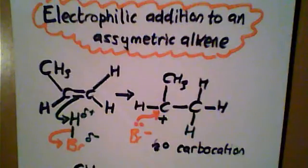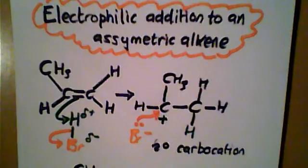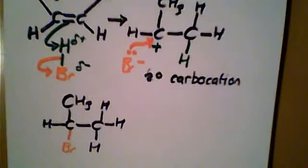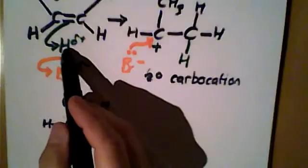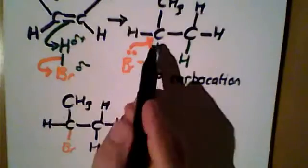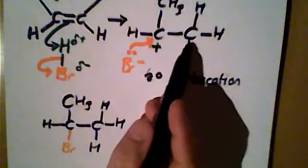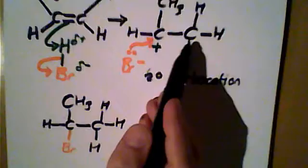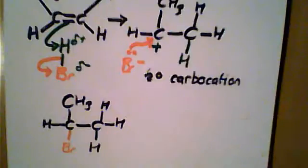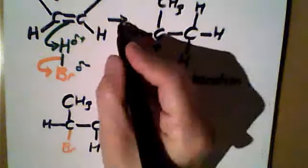With the bromine being on carbon number two, so that is one possible scenario. The second possible scenario is that the hydrogen could attach itself to carbon number two and the bromine will go onto carbon number one, and that would go via a primary carbocation.